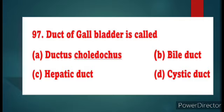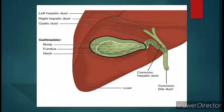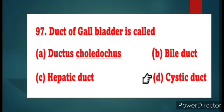Question number 97: Duct of gallbladder is called cystic duct. The duct from the right and left lobe is called the common hepatic duct — that is, the combination of right duct and left duct. This common hepatic duct combines with the cystic duct of the gallbladder to form the common bile duct. The common bile duct is also known as ductus choledochus. The answer is option D, cystic duct.